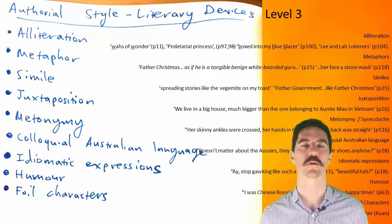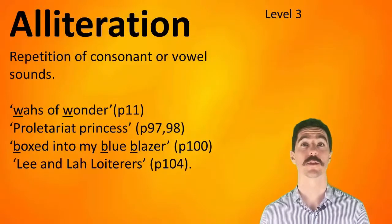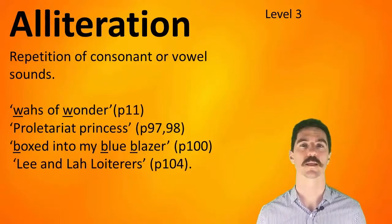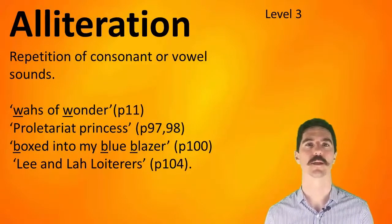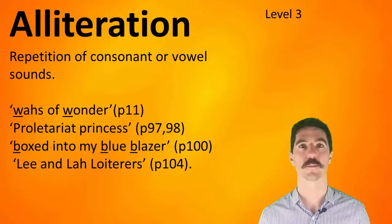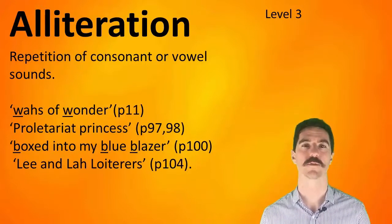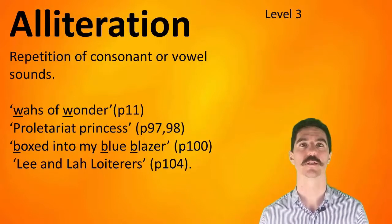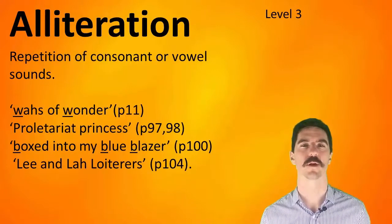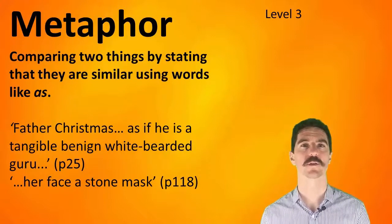Alliteration is just a repetition of vowel or consonant sound. The examples we've got here are 'Waz of Wonder,' 'Proletariat Princess,' 'Lee and La Loiterers,' and 'Boxed Into My Blue Blazer.' Pause the video, find these examples on the page, and highlight them or write the name of the literary device next to them. Then keep in mind when you're rereading what alliteration looks like.